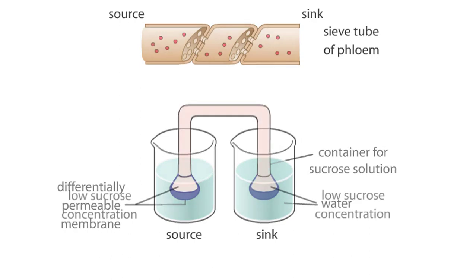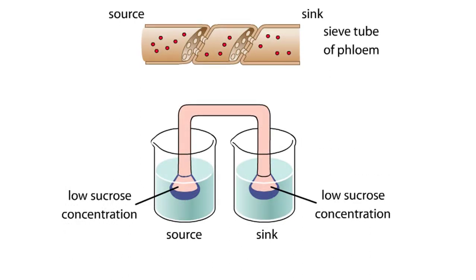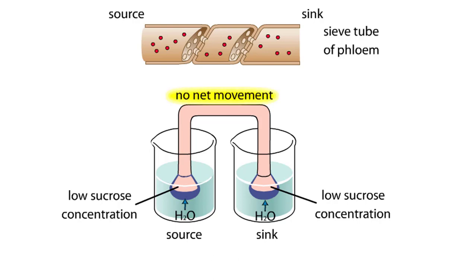In an experiment where each funnel contains the same low concentration of sucrose, water diffuses by osmosis into both funnels equally. Since neither funnel takes on more water, there is no net movement of the solution in the tube. As internal pressure builds, water no longer enters either funnel.